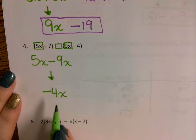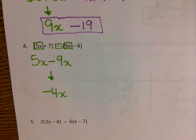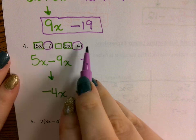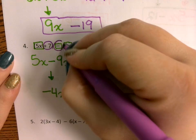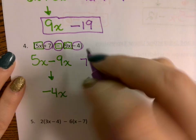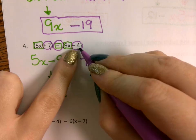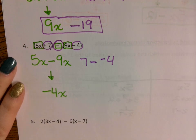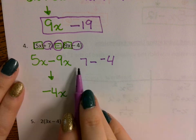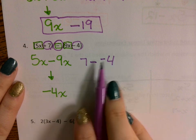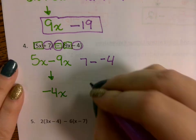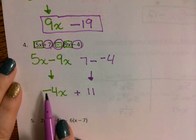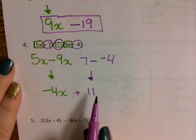For the constants in purple, we have positive 7 and negative 4. We're subtracting because it's still a subtraction sign between them. 7 minus negative 4 — remember, no double negatives — comes out to positive 11. So the final answer is negative 4x plus 11.